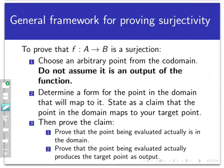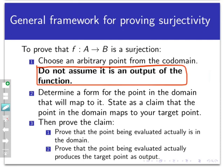If we want to prove that f from A to B is a surjection, we start by choosing an arbitrary point from the codomain — and very importantly, we do not assume it is already an output of the function. We pick a point out of the codomain and don't even look at the function yet. It would be a disaster to start by assuming that the point is an output, since that's exactly what we're trying to prove.